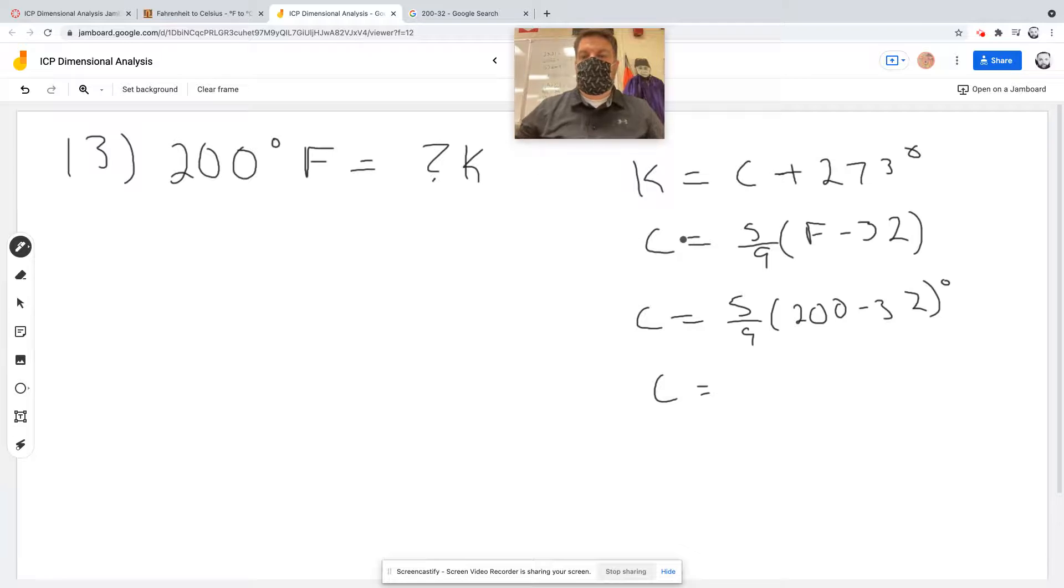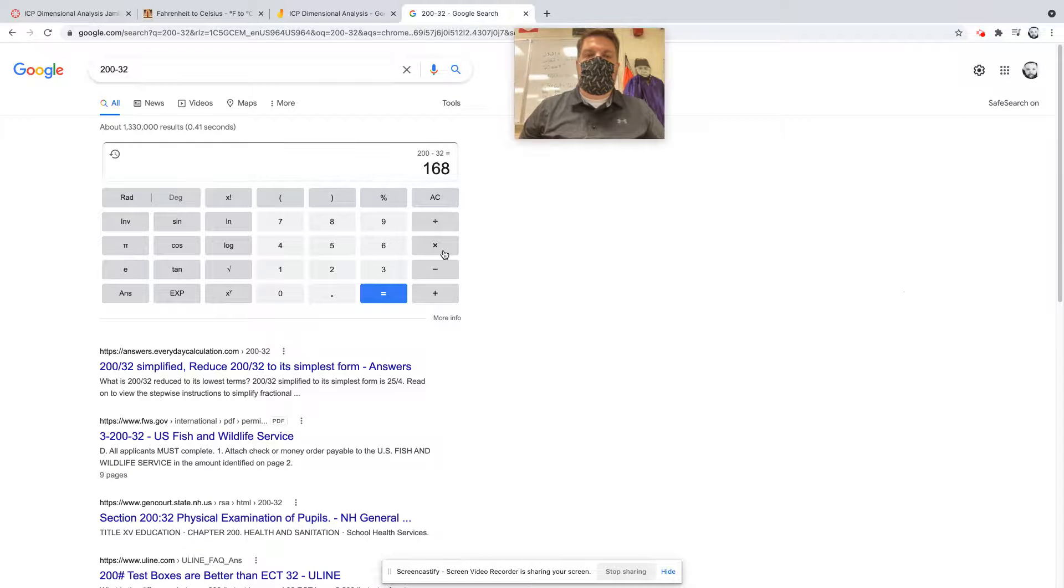So this is going to be 5 ninths times 168. Now, I'm going to go ahead and just plug this in the calculator. To get this answer, I just multiply by 5 and divide by 9. So I'm going to take my 168, multiply by 5, get what that is, then divide by 9.